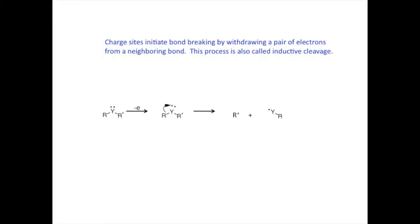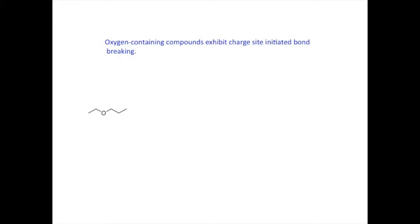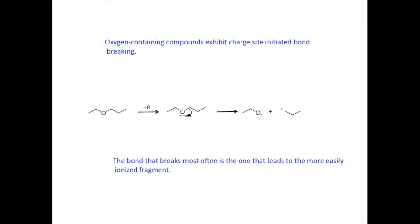Let's look at some specific molecules. Oxygen-containing compounds exhibit this sort of inductive cleavage. Here we have an ether molecule. Ionization is most likely to lead to loss of an electron from a lone pair associated with the oxygen atom. The charge withdraws a pair of electrons from an adjacent bond. That bond breaks as a result. Since the carbon next to the oxygen lost both electrons in the process, the charge moves to the carbon atom. The fragment with the oxygen is now a neutral radical. The alkyl fragment is the one observed in the spectrum. The most probable bond to break will be the one that leads to the most easily ionized fragment. Here the choice is between the ethyl group and a propyl group, and the propyl group is more easily ionized because of its size.